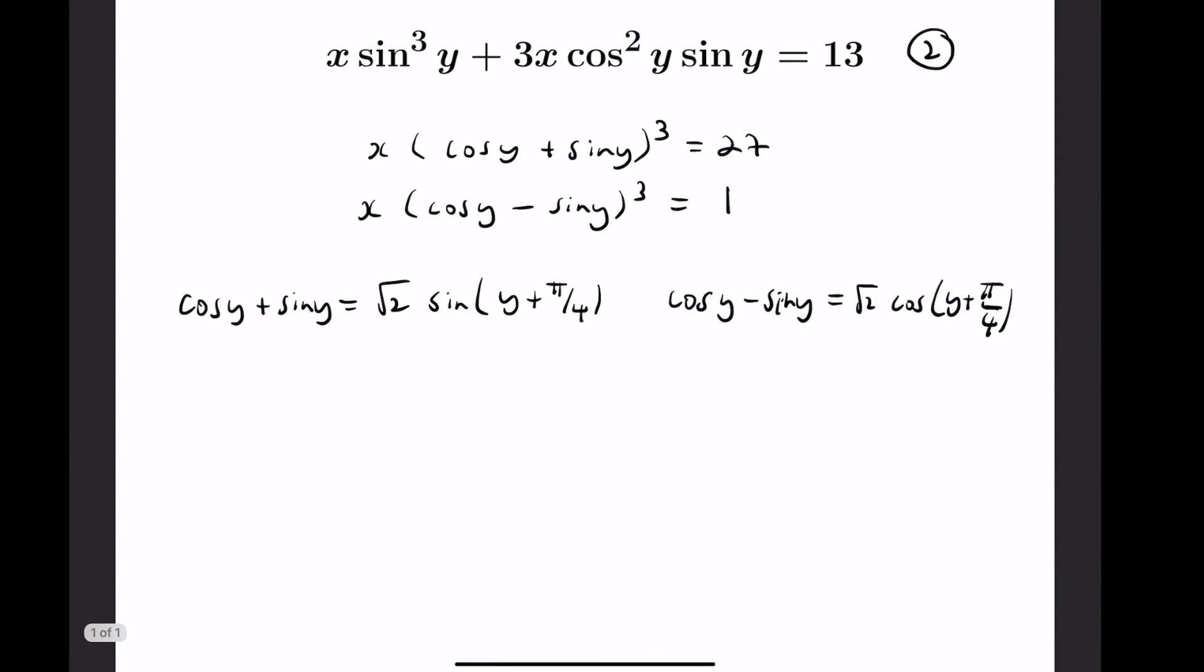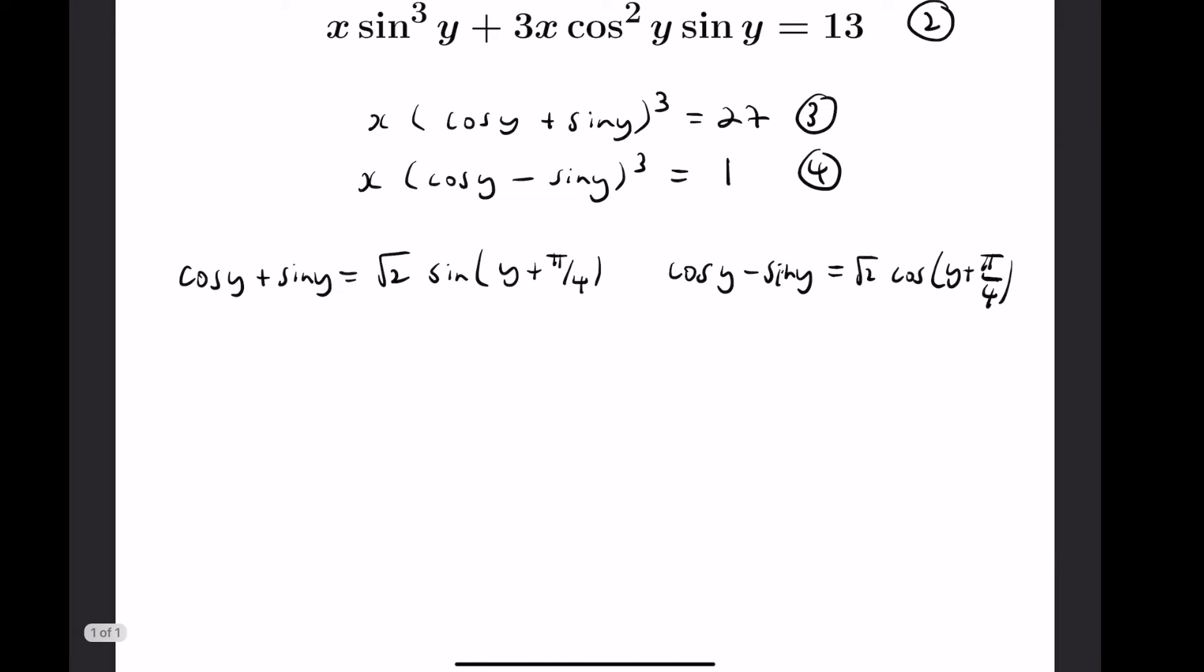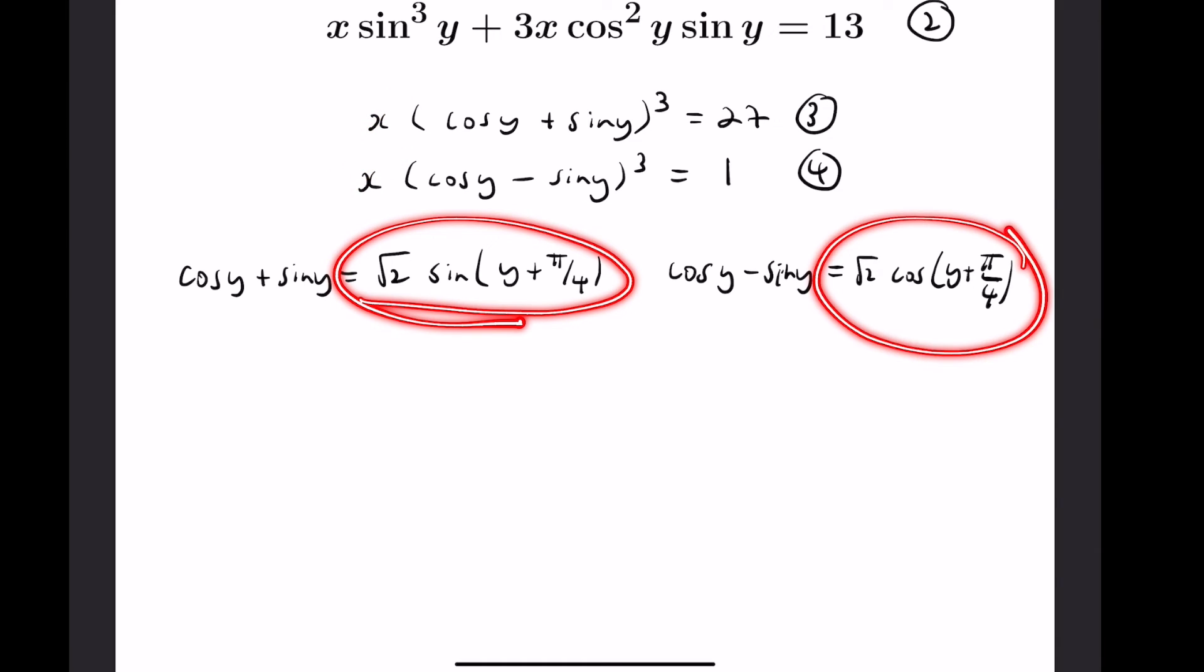So now doing that, if we label this equation that we got from the original equations as 3 and 4, if we now divide these we'd eliminate the x's and we get this quantity cubed divided by this quantity cubed.